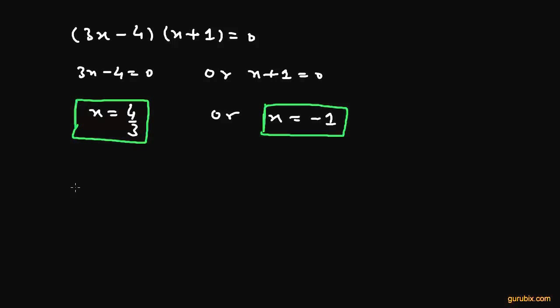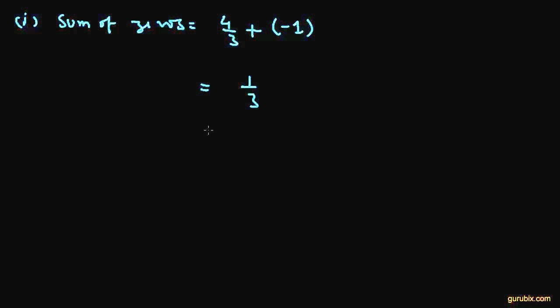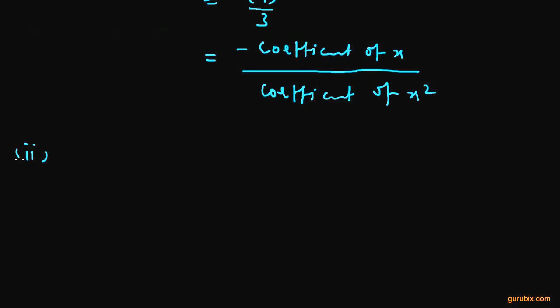Now we shall verify the relationship between the zeros and the coefficients. First, we find the sum of zeros: 4/3 plus (minus 1) equals 1/3. We can write this as minus(minus 1/3), which equals minus(coefficient of x) over (coefficient of x squared). This relationship is verified.